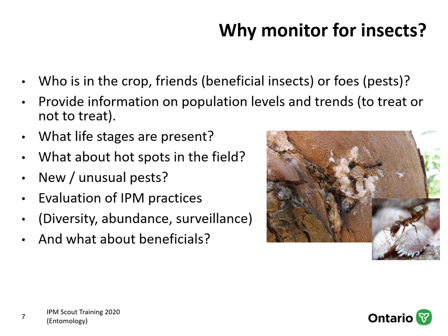So why monitor for insects? If you monitor, you'll know what's there. You can't just stand outside your vehicle and imagine what's there — you need to actually get out and scout. Scouting tells you who's in the crop, including both pests and beneficial insects. It provides information on population levels and trends. With insects, it's often a numbers game; there are certain thresholds where you can tolerate some pests to a certain level without treating. In some cases the threshold is zero. If you're not out there looking, you won't know.